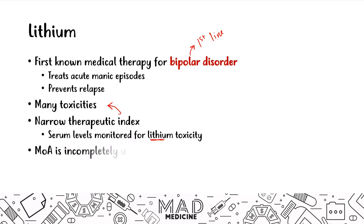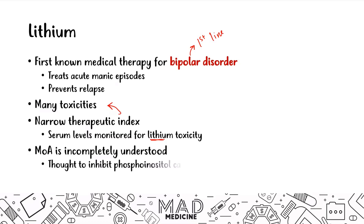When it comes to the mechanism of action, we actually don't know exactly what happens — which is good for you. You don't need to remember a specific MOA for lithium. What you do need to know is that lithium is thought to inhibit the phosphoinositol cascade by inhibiting inositol monophosphatase. So just remember it's the first-line treatment for bipolar disorder and it works by inhibiting inositol monophosphatase in the phosphoinositol cascade.